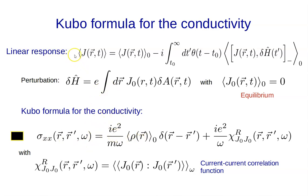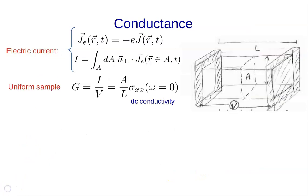So we've derived the Kubo formula for the conductivity. It depends on one over ω and on the retarded current-current correlation function at a given ω. This is the so-called Kubo formula: σ_xx depends on this response function, the current-current correlation function, which in principle we can calculate for a given system.